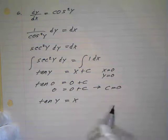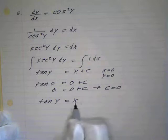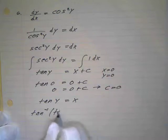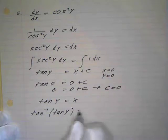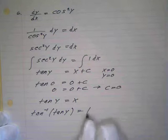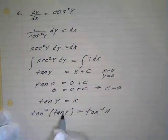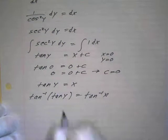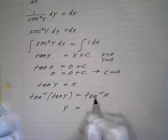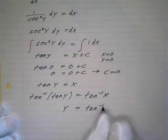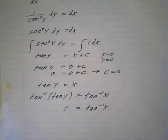So tan of y equals x. To find y, we take the inverse tangent of both sides. That undoes the tangent because they're inverse functions, so we end up with y equals the inverse tangent of x.